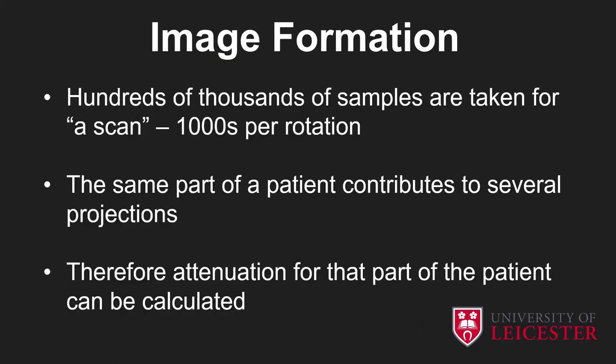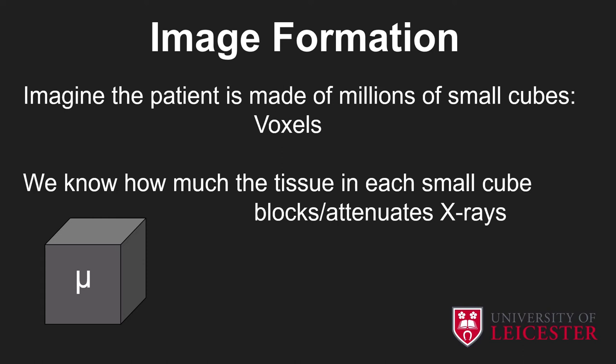In terms of forming the image, hundreds of thousands of samples are taken for a scan — thousands per rotation — and the same part of a patient contributes to several projections. All modern scanners scan the patient in a single continuous movement; the patient is driven through the scanner on the couch. It's no longer right to talk about a scanner requiring a slice at a time — the whole patient is scanned and those slices are produced later via the computer. Imagine the patient is made up of millions of tiny cubes — we call these voxels or volume elements — and by using all those projections, we know how much the tissue in each small box attenuates x-rays.